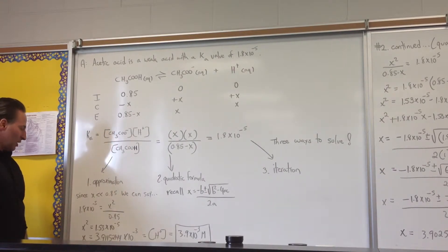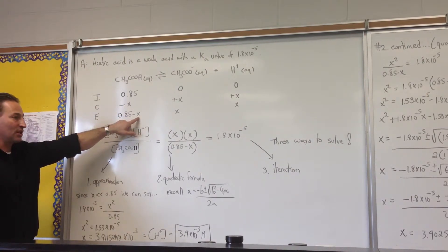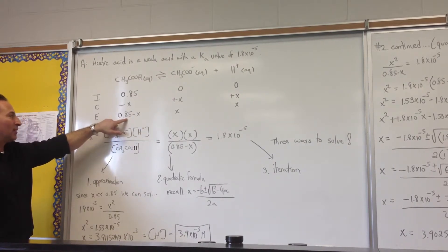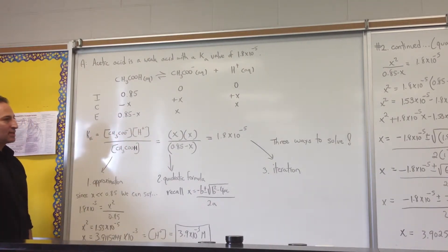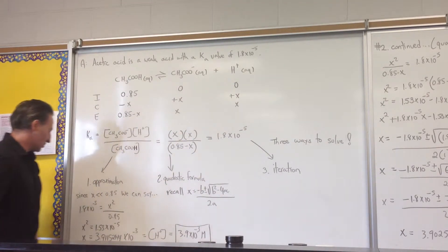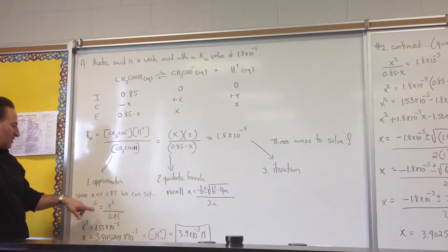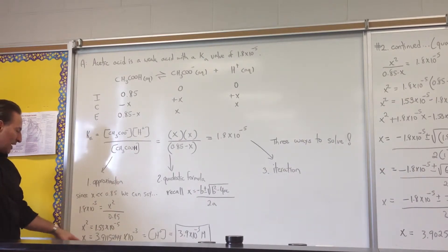We'll start with the easiest one, the method of approximation. In this technique, you would assume that X is very small. Because it's a weak acid, the amount of acetic acid that dissociates is going to be a tiny amount, tiny compared to 0.85. So we can assume that if we cross out the X, it's going to have little or no effect on the numerical value. We simplify the equation from X squared over 0.85 minus X to simply putting the denominator as 0.85. When we do the math, we get a value of X equal to 3.9 times 10 to the minus 3, which corresponds to the proton concentration under these conditions.